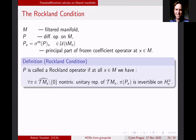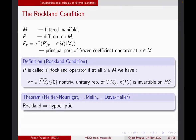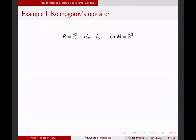The big theorem is that Rockland operators, just like classical elliptic operators, are hypo-elliptic operators. Melin proved this in full generality for filtered manifolds back in 1984 in a preprint — he proved it by introducing a differential calculus similar to the Beals-Greiner calculus — but he never published this work. This remained in an unpublished state until quite recently when Davey and Haller finished the proof using the pseudo-differential calculus I'm about to describe.